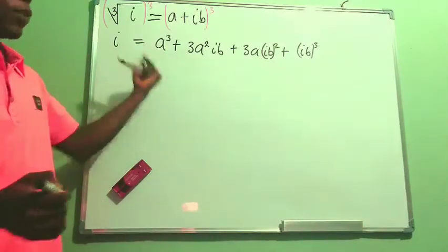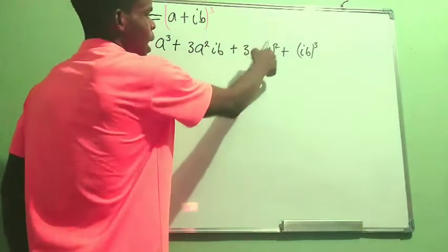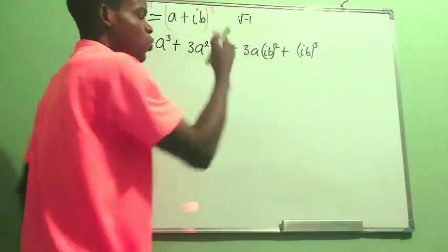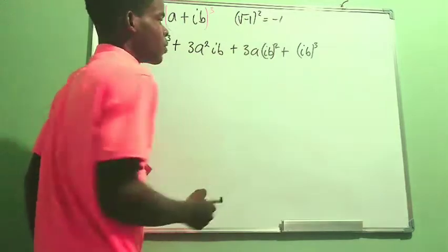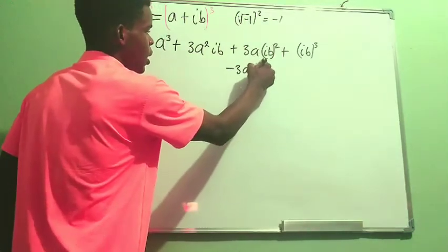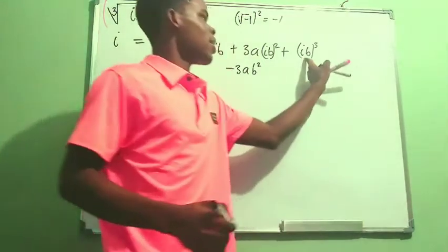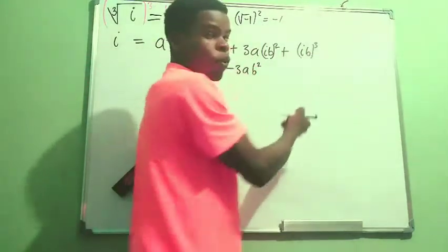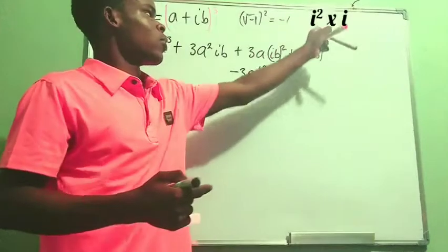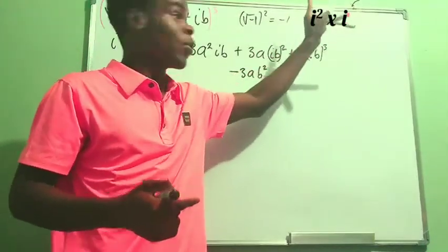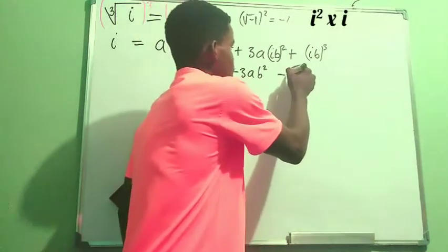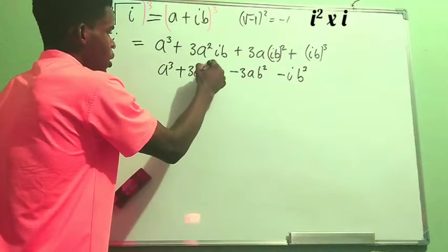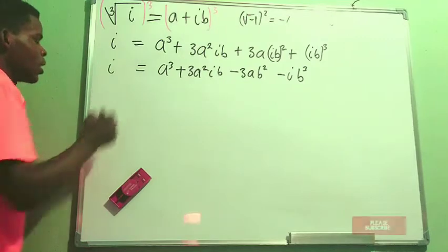Now we simplify further. We know that (ib)² becomes i²b² and since i is the square root of negative 1, i² = −1, so that term becomes −3ab². For the (ib)³ term, i³ = i²·i = −1·i = −i, so that becomes −ib³. On the right we have a³ + 3a²(ib) − 3ab² − ib³.